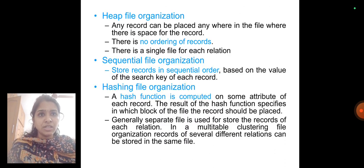Organization of records in files. There are different types of file organization. One is heap file organization: any record can be placed anywhere in the file where there is space for the record. There is no ordering of records. There is a single file for each relation.